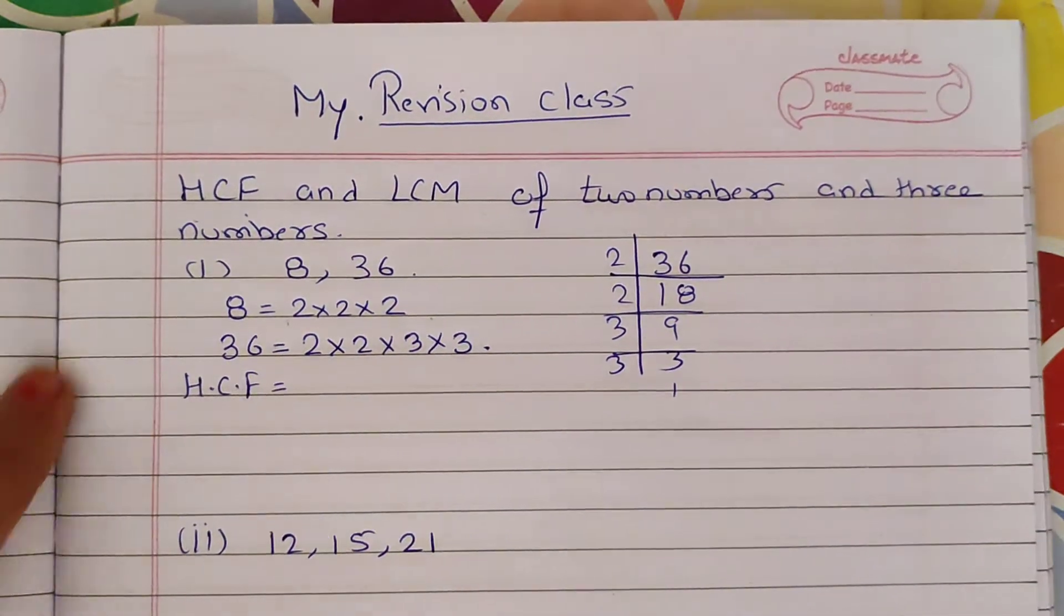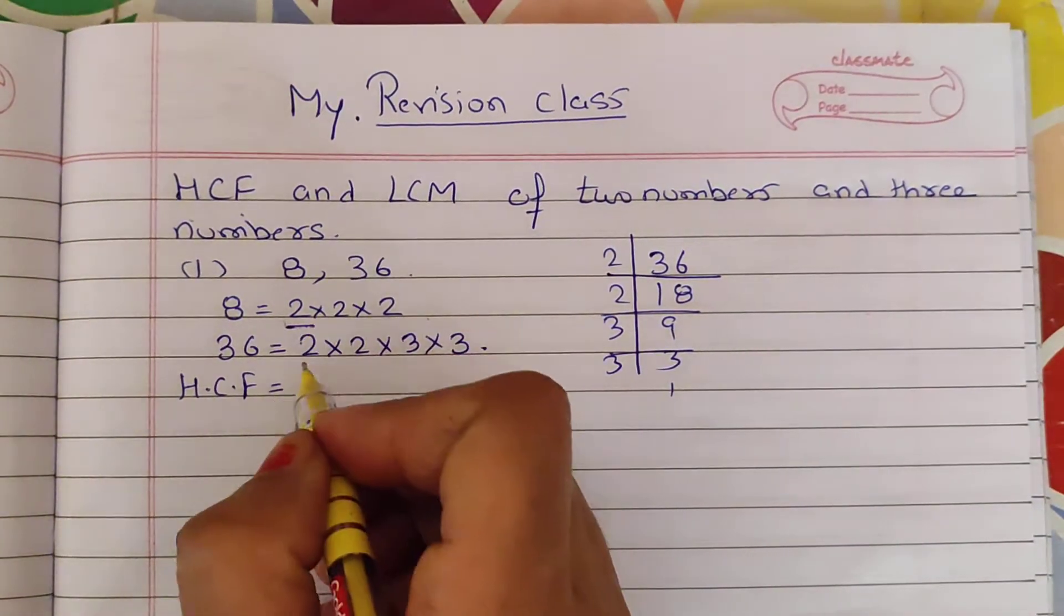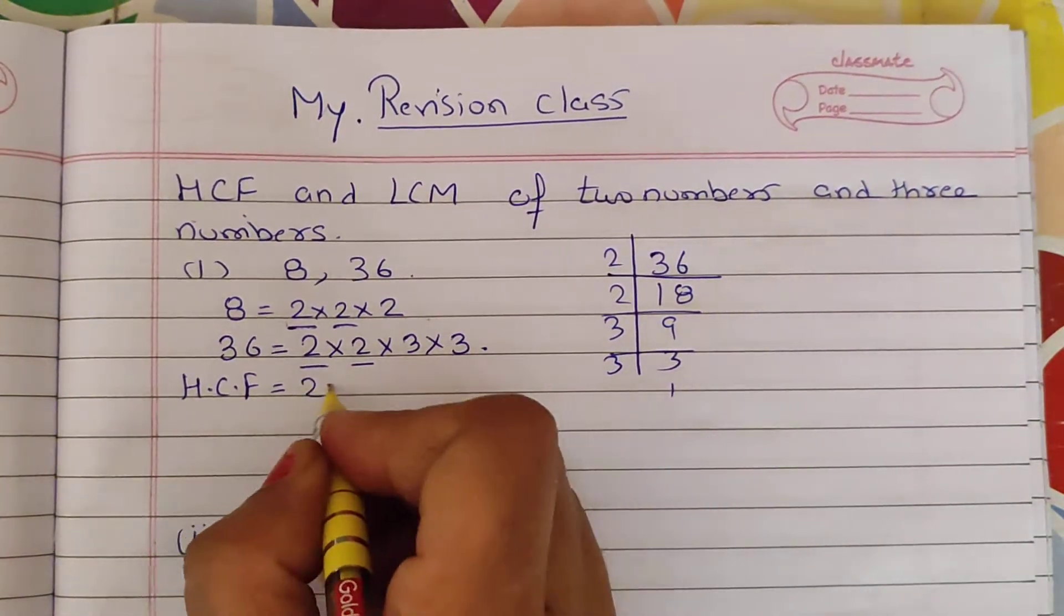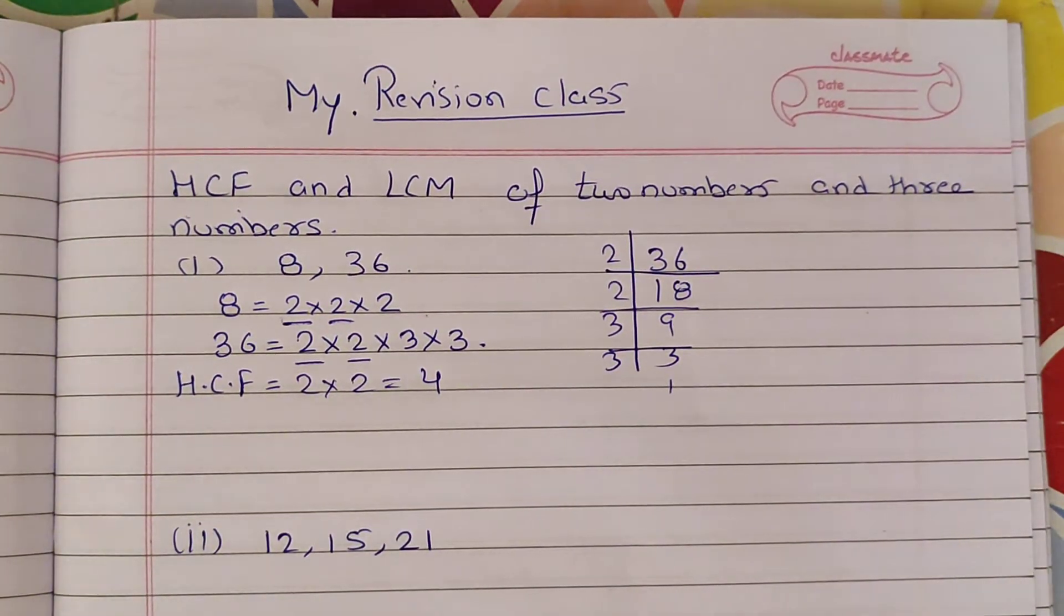If we make HCF, then HCF is the highest common factor. What is common? 2 is the common factor in all. 2 into 2, what is HCF? 4. When I have done this exercise, students, I will watch the video lecture and exercise.